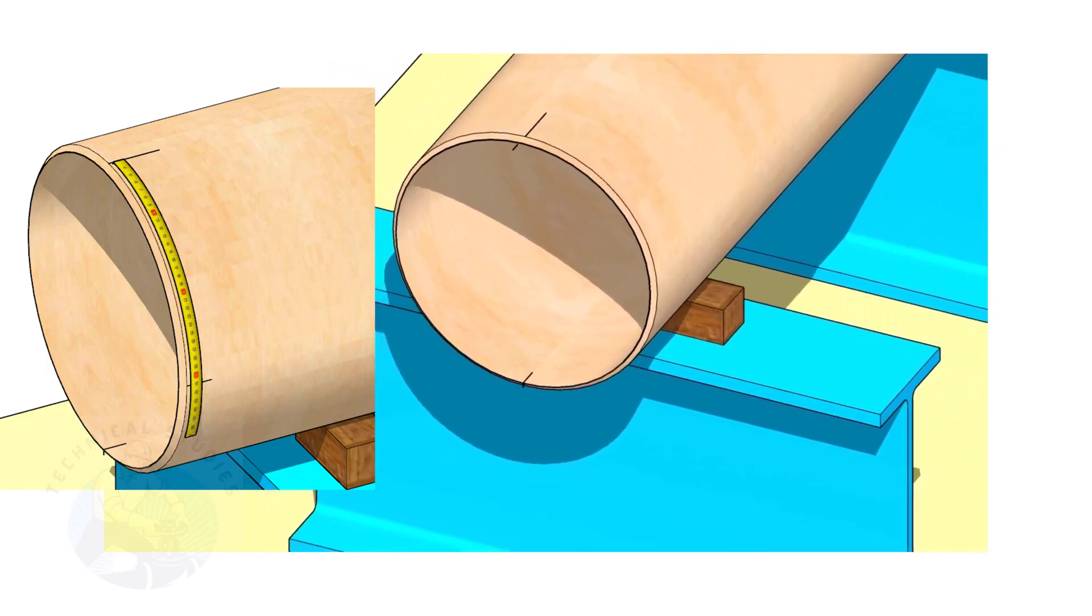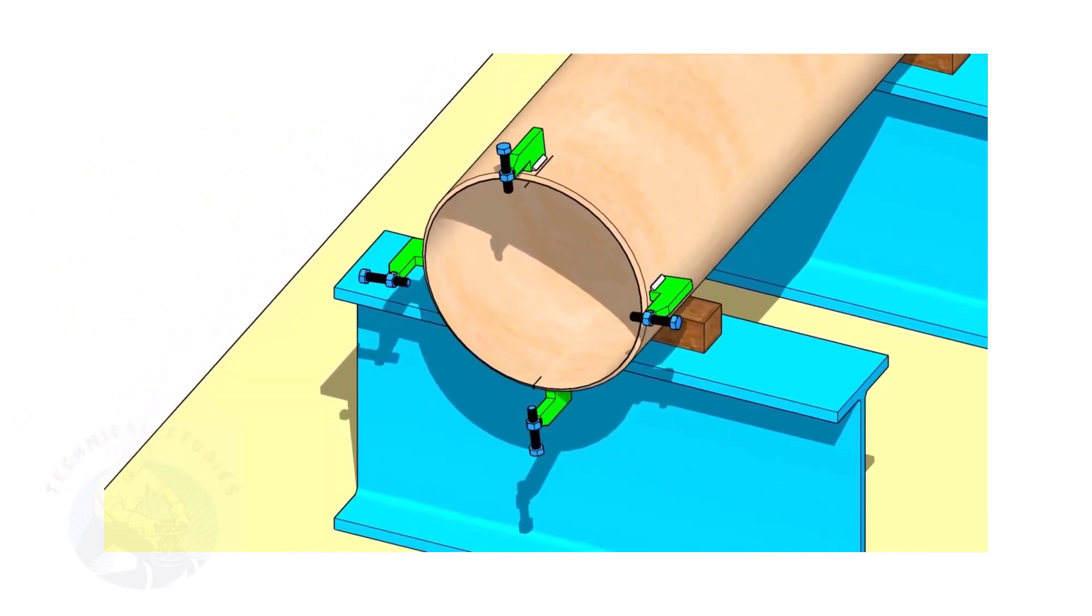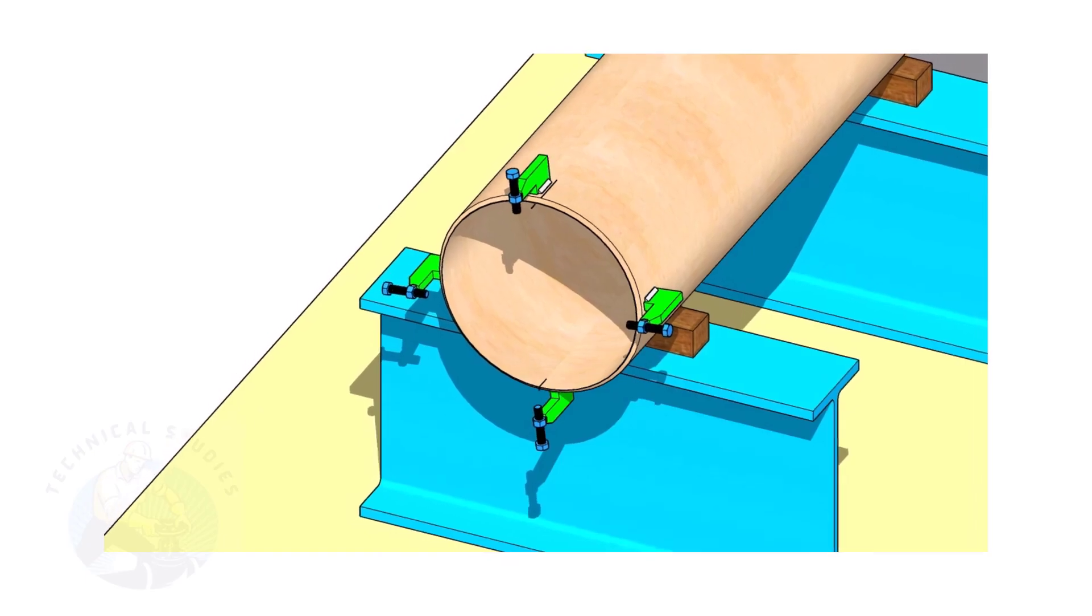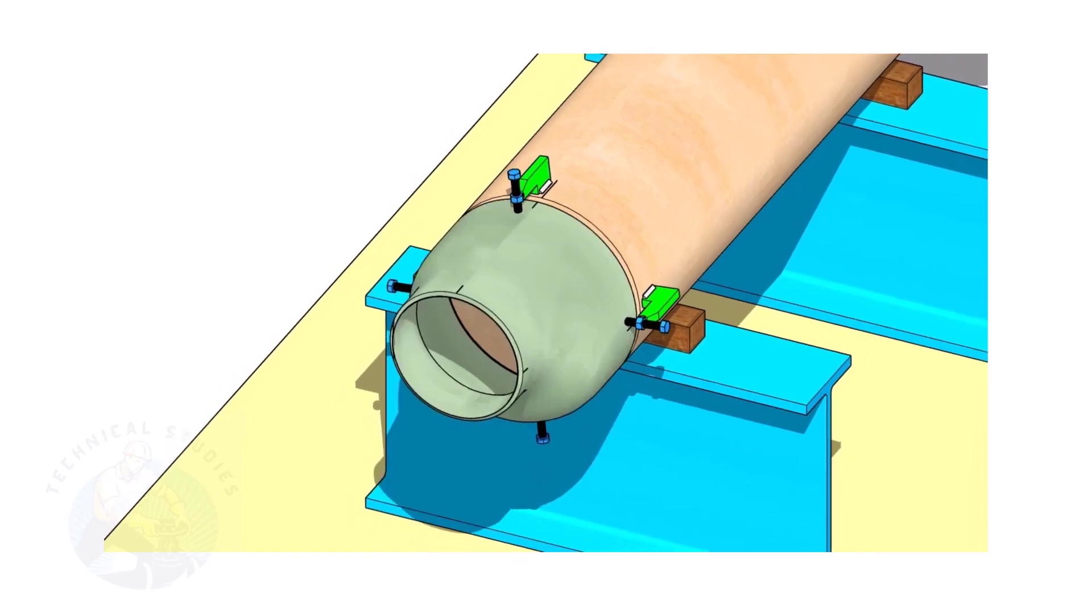Mark the quarter circumference on both sides of the pipe. If you don't have a pipe aligning clamp, tack weld four numbered jack bolts 90 degrees apart as shown.